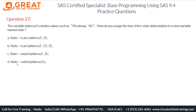Option D is: state = substr(address2, .) — with a dot. Looking at this option, the dot makes it appear incomplete and unlikely to yield the desired result. Therefore, the correct answer is Option A: state = scan(address2, 2). The SCAN function searches for the second word; default delimiters (comma and space) are automatically excluded, returning 'NJ' as the two-letter state abbreviation.